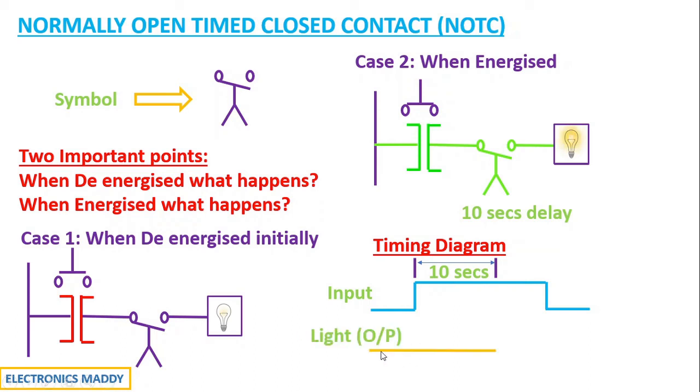Initially it will be zero up to this point. Once energization is given to this particular contact NOTC, it will start counting up to 10 seconds. After 10 seconds, what happens? It will go to high state.